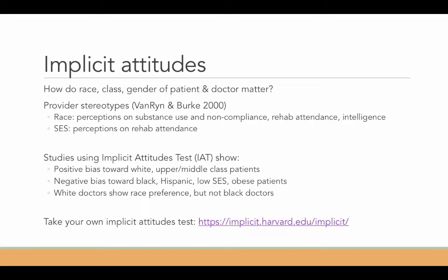This follows research using the Implicit Attitudes Test. The IAT is a test you can take online — you can examine your own implicit attitudes on race, religion, gender, or mental health status. The idea is that we have biases that are sometimes subconscious, formed through strong cultural images about people of different racial, ethnic, religious, gender, and social class backgrounds. Research using IAT among doctors shows that even without outwardly displaying bias, doctors tend to show positive bias toward white upper-middle class patients and negative bias toward black and Hispanic patients, low SES patients, and obese patients. One study also showed white doctors showed strong preference for white patients, while black doctors showed no racial preference at all.